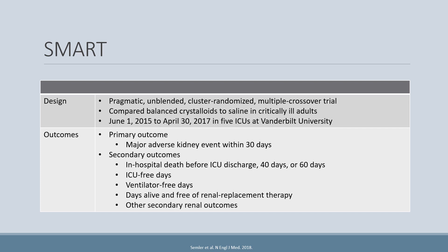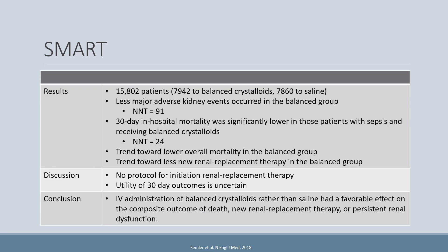Their primary outcome was major adverse kidney events within 30 days. Secondary outcomes included in-hospital death before ICU discharge at 30 or 60 days, ICU-free days, ventilator-free days, and days alive and free of renal replacement therapy. They enrolled 15,802 patients — 7,942 to balanced crystalloids and 7,860 to normal saline. They saw fewer major adverse kidney events in the balanced group, with an absolute rate reduction yielding a number needed to treat of 91.